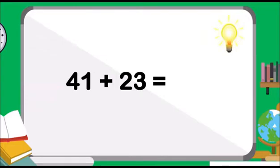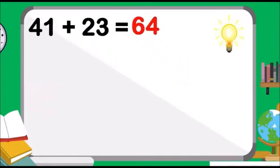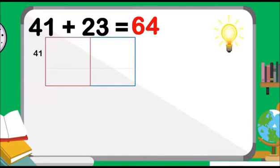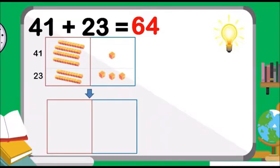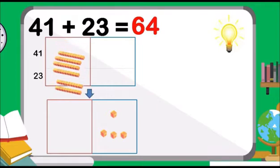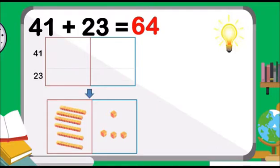What is 41 added to 23? 41 plus 23 is equal to 64. Let us check the answer by using a place value chart and base 10 blocks. 41 has 4 tens and 1 one. 23 has 2 tens and 3 ones. Let us put together 1 one and 3 ones. Let us put together 4 tens and 2 tens. We now have 6 tens and 4 ones. 6 tens and 4 ones is equal to 64.